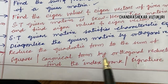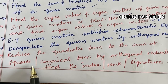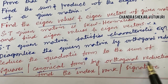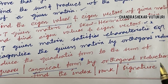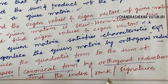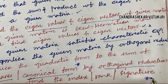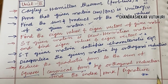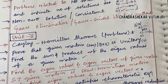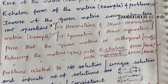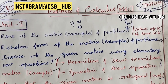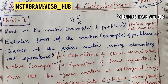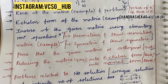Reduce the quadratic form to a sum of squares — canonical form by orthogonal reduction method — as well as finding the index, rank, and signature, may be the topmost question, with the index, rank, and signature part being a short question. These are the questions I have covered from Unit 2. Hope you are going to like my videos. If you haven't subscribed to my channel, please do so immediately and press the bell icon to receive the latest notifications on important questions and concepts related to B.Tech.